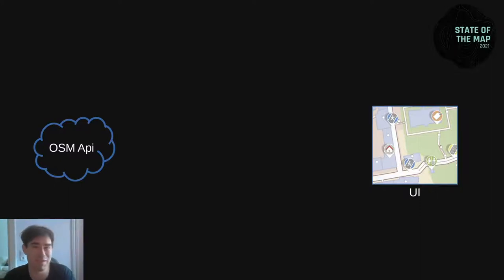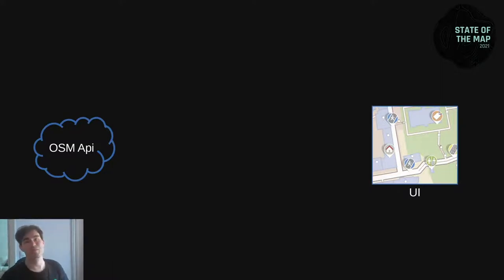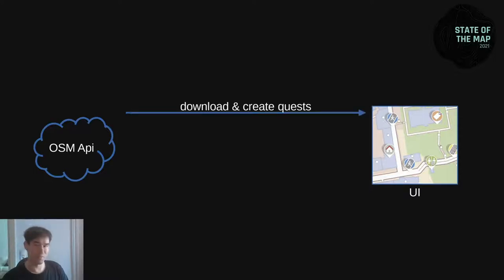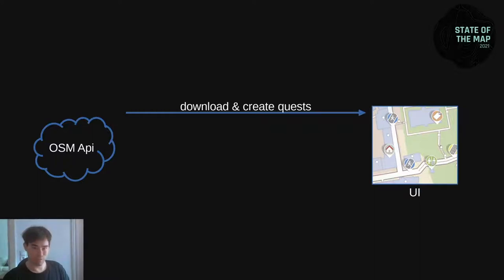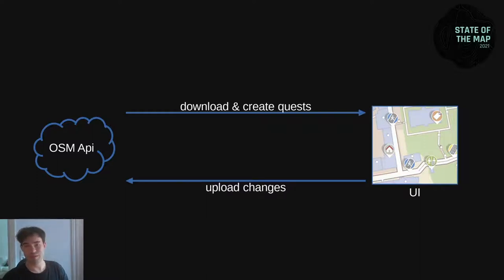In the beginning, we have the OpenStreetMap API from where we get the data, and on the right side we have the UI. We want to display the quests. So the easiest architecture would be to just download the OpenStreetMap data and create the quests out of that. The quests are displayed in the UI. When we do edits, when we answer the questions, then we simply upload the changes — the edits — and that's it.